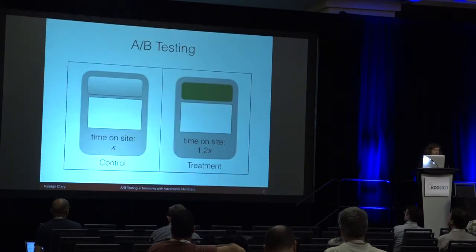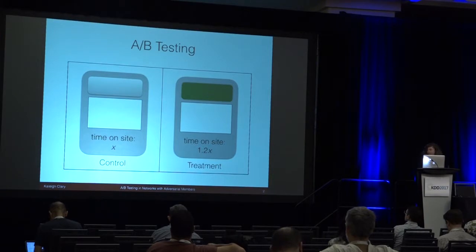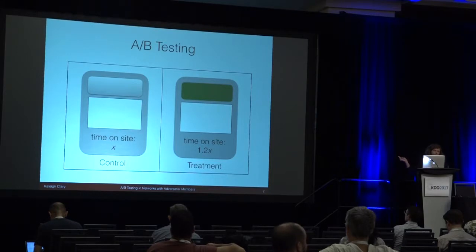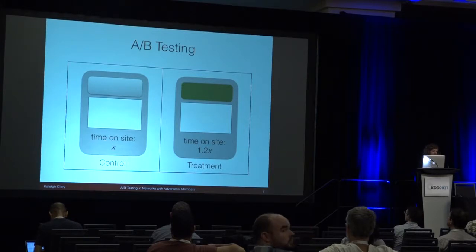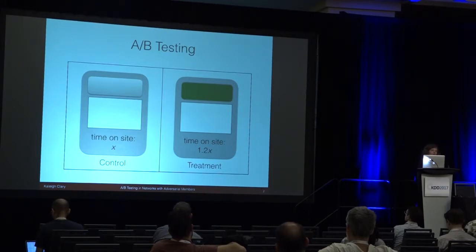We're all probably familiar with A-B testing in the general setting. We have some treatment that we'd like to estimate the strength of effect for some outcome of interest. In this example, we change the color of our banner to green and we'd like to see if that increases the amount of time some visitors spend on our site. We divide the population of visitors into treatment and control — people in treatment see the green, people in control see the white — and then we determine the difference between those two average times on site.